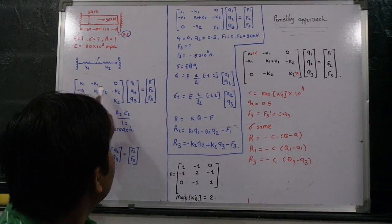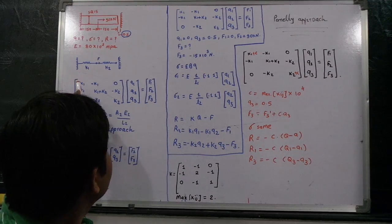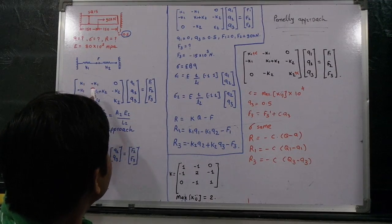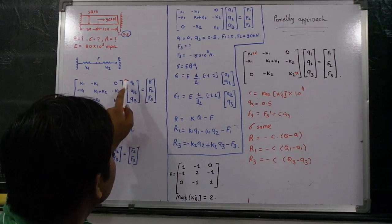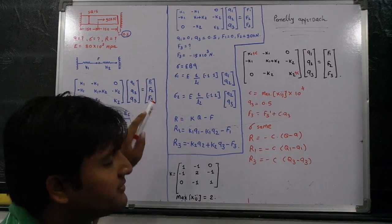By using the elimination approach, I am putting this equation: k1 minus k1 minus k1 k1, k2 minus k2 minus k2 k2, q1 q2 q3 is equal to 0 f2 f3.